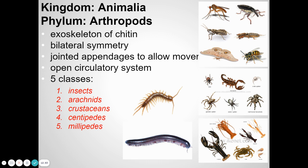Centipedes have one leg on each body section; millipedes have two pairs on each section. Arthropod crustaceans include lobster, crayfish, shrimp, and crab — which people often eat. Some people eat insects too. Insect protein may be the wave of the future — crushed insects can be used as flour in baking. They're very high in protein, inexpensive, don't take many resources to grow, and are an important source of protein in many cultures.